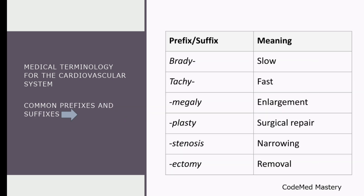Let us move on to the prefixes and suffixes of the cardiovascular system. Brady means slow — for example, bradycardia, which means slow heart rate. Next is tachy, which means fast — for example, tachycardia, fast heart rate. Next is megaly, which means enlargement; plasti is surgical repair; stenosis means narrowing; and ectomy is removal.